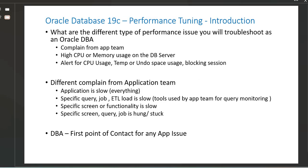Today we'll talk about what kind of different performance tuning issues you'll be dealing with and the complaints you'll get from different teams. You'll get performance issues from the application team reporting slowness, or you'll get high CPU or memory usage alerts from the database server. If the CPU load is really high, the DB server might not respond or it might hang. You'll also get alerts like blocking sessions or temp space usage that indicate something is going on with the database in terms of performance.